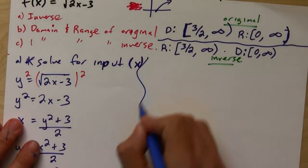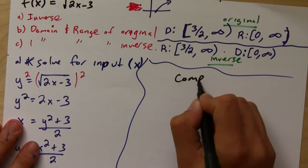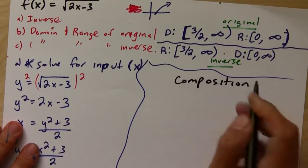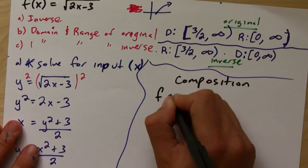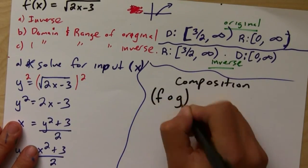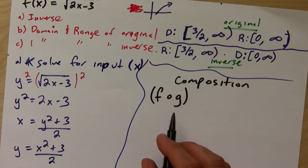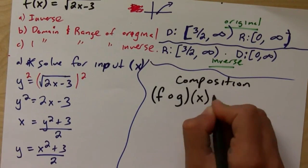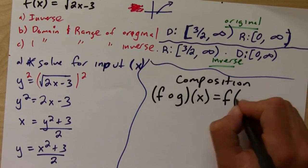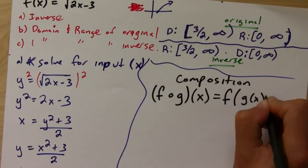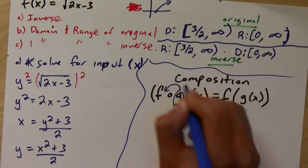Let's do a couple of function composition problems. Composition is when you plug a function into another function. The composition symbol looks like a little small o. What F composed with G means is plug G into F — so this is really F of G of X. All this says is grab the second function and plug it into the first one.